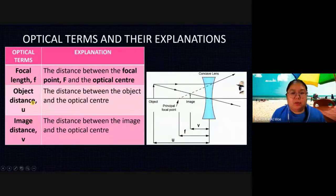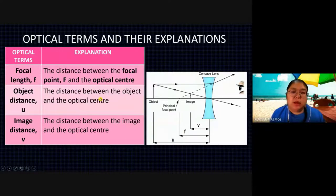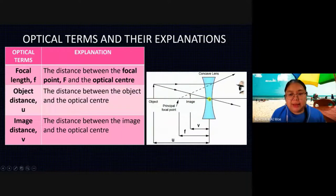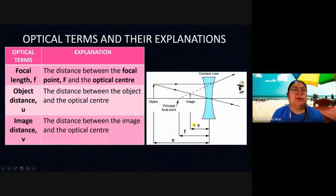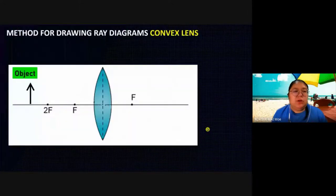Object distance u: from the object to O, the center of the lens. Image distance v: from the image to O. So when I write u, f, and v, you must understand what each one means.